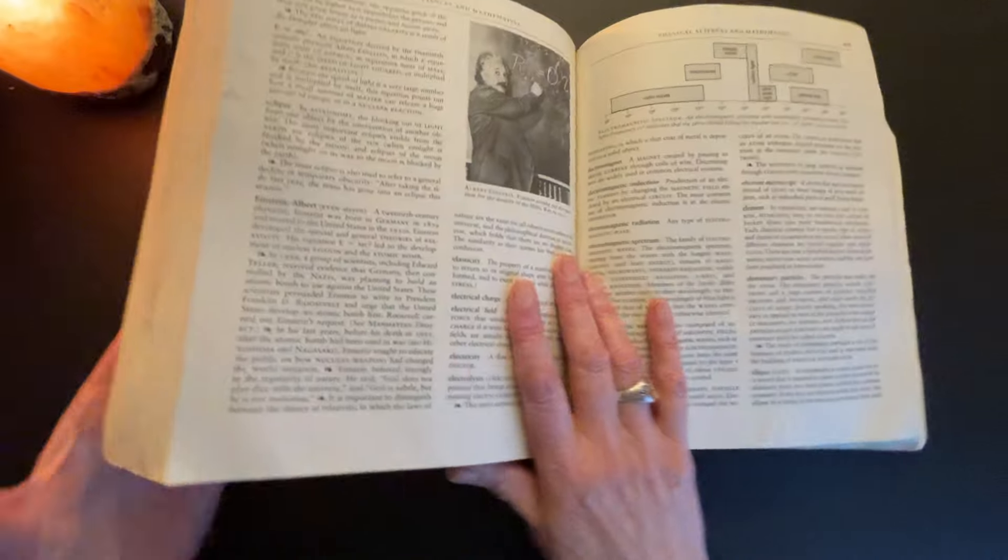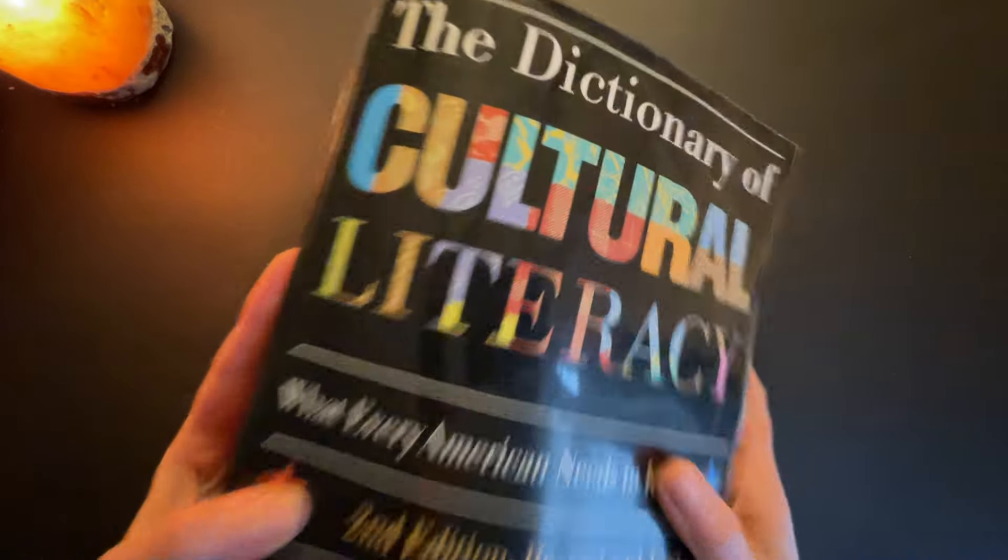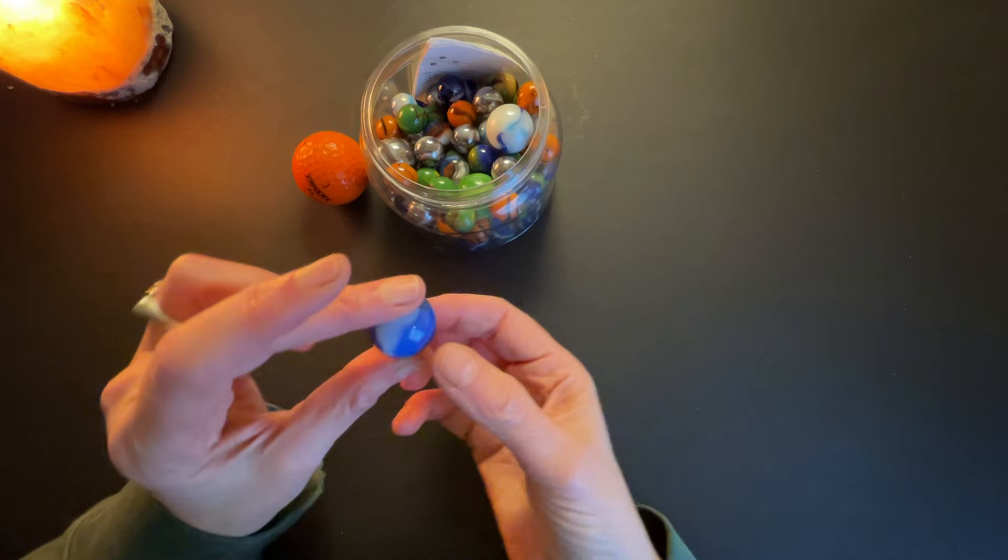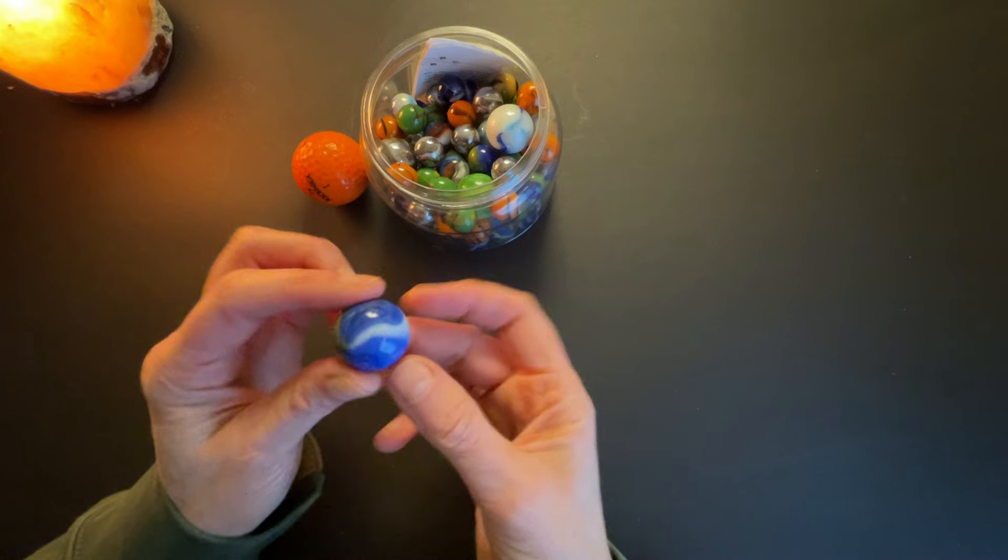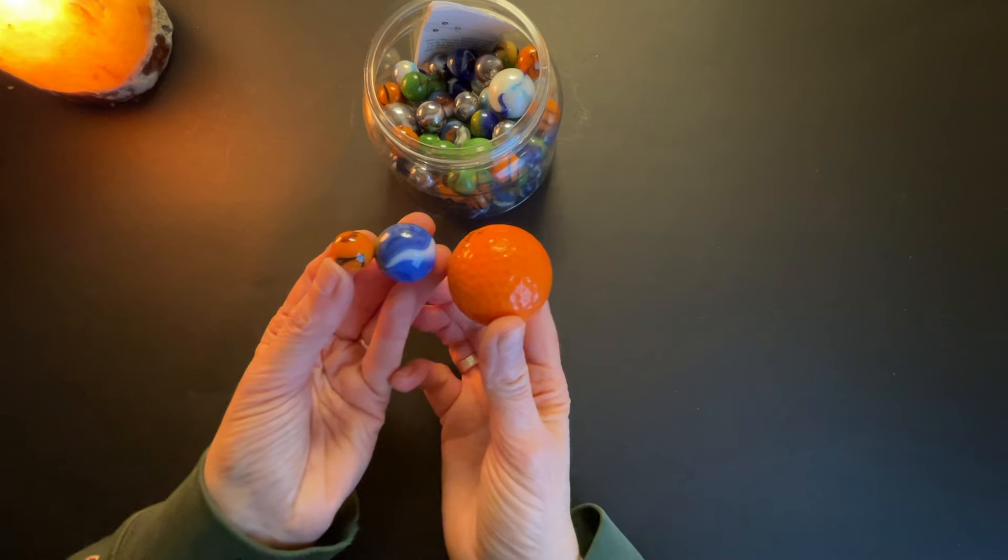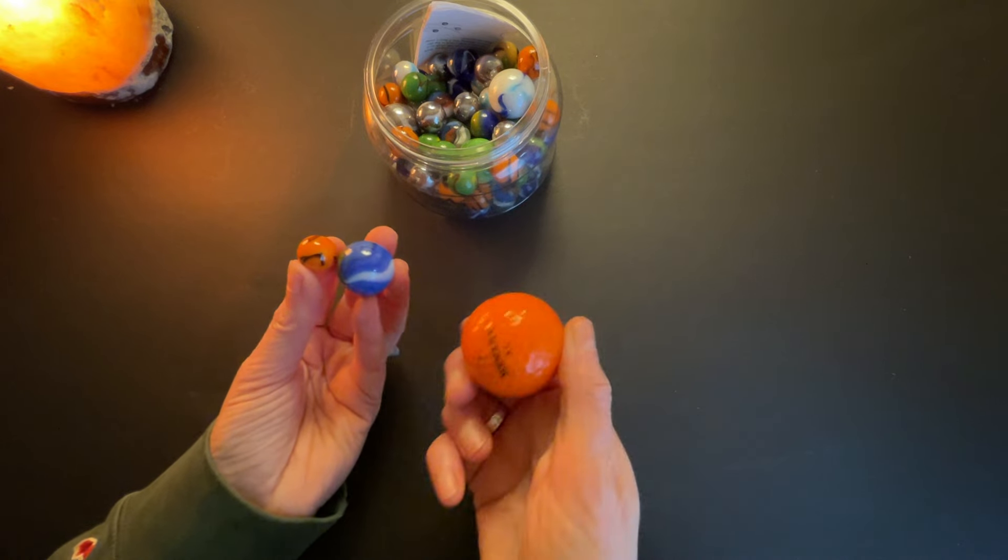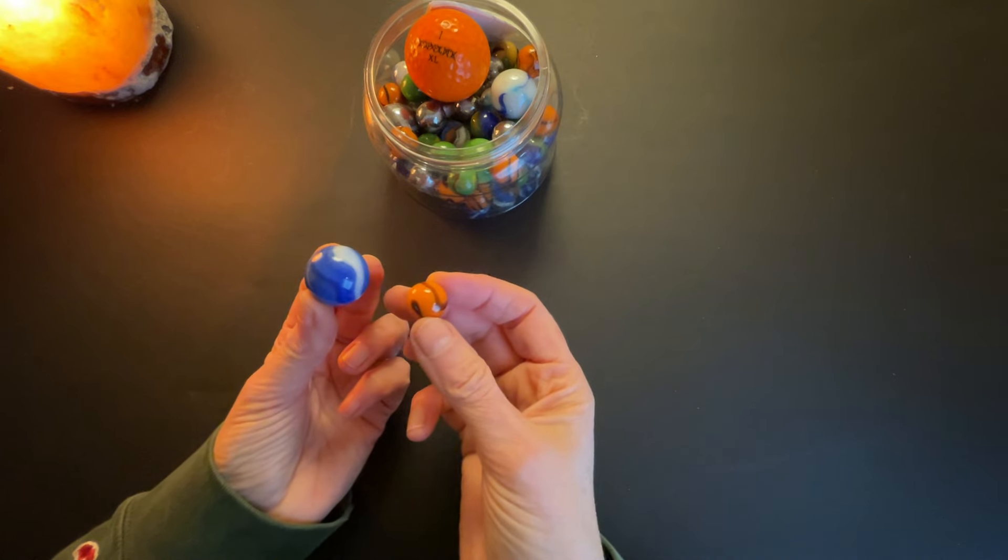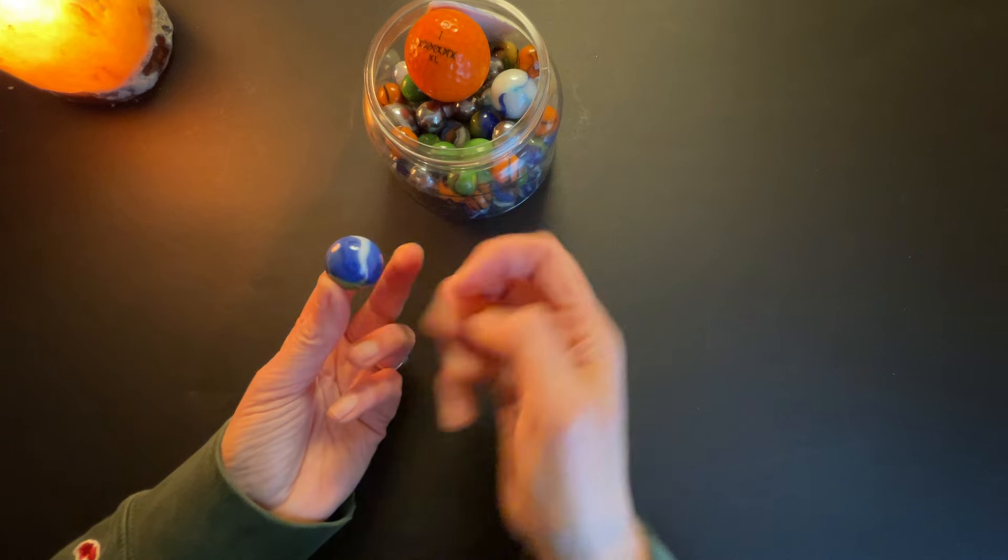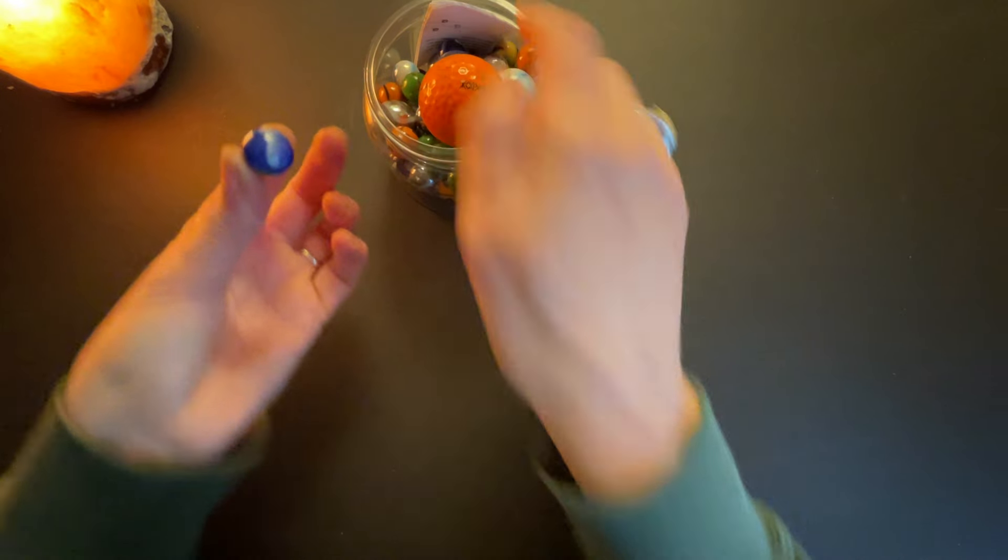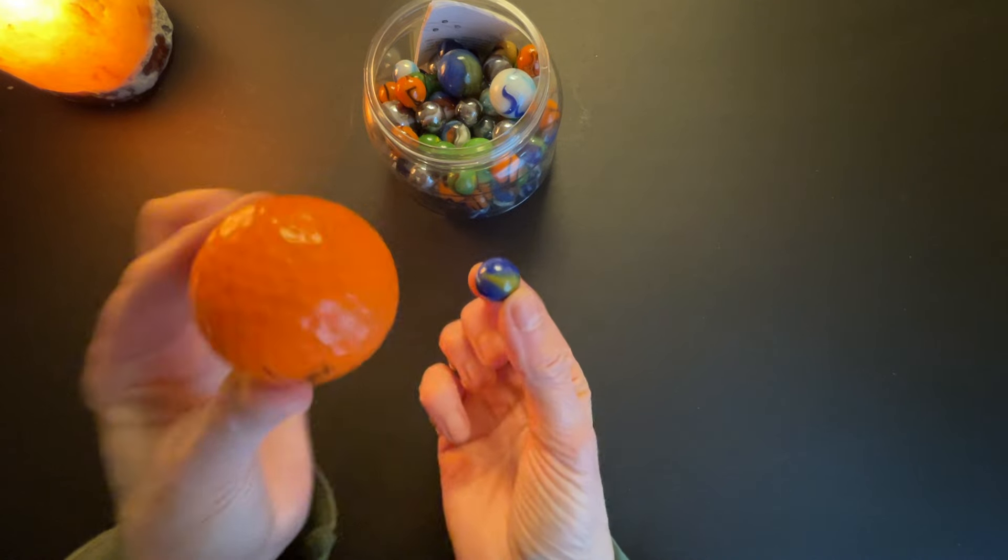All right, so I have my marbles here, and at first I thought that I might use a marble like this to signify the Earth and one like this to be the moon. But I realized one of the things that's sort of awesome about an eclipse is that our small moon can block out the sun, so I decided to switch it up and use this to be the Earth and a blue marble to be the moon.